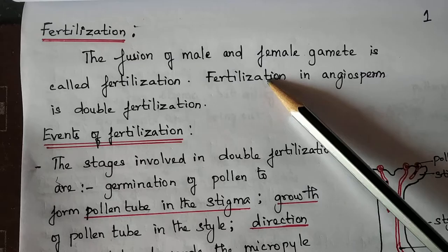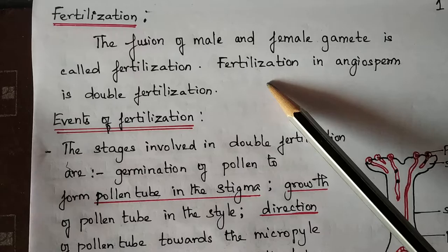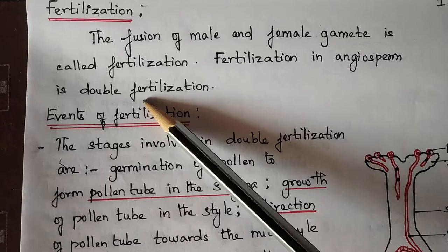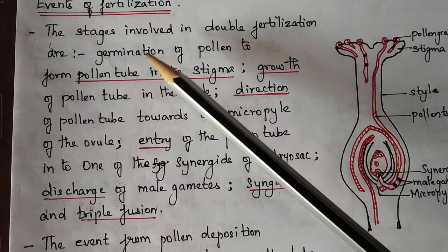Good morning students! In the last class, you found pollinating agents. Now, how do you find fertilization? The fusion of male and female gametes is called fertilization. In angiosperm plants, fertilization is called double fertilization.